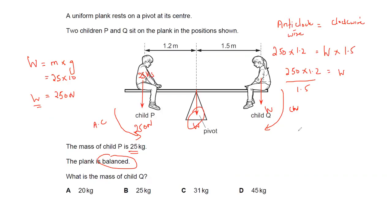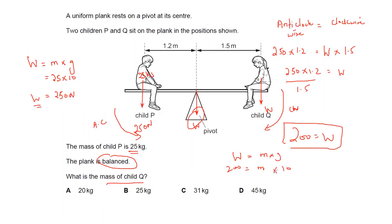The question asks for the mass of child Q, not the weight. Using weight = mass × gravity: 200 = mass × 10, so mass = 200 ÷ 10 = 20 kg. The correct answer is A — 20 kg.